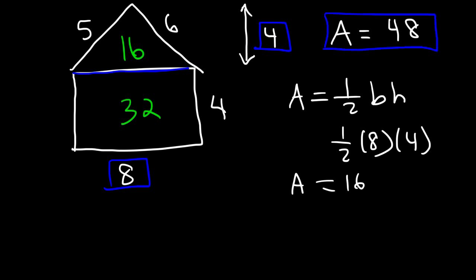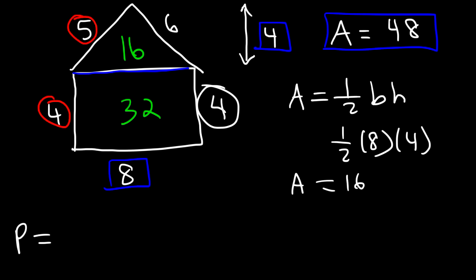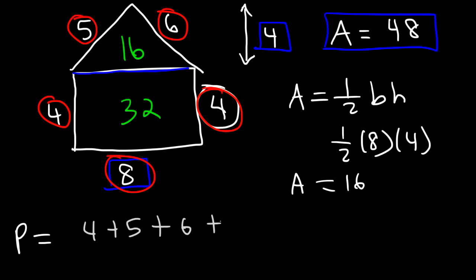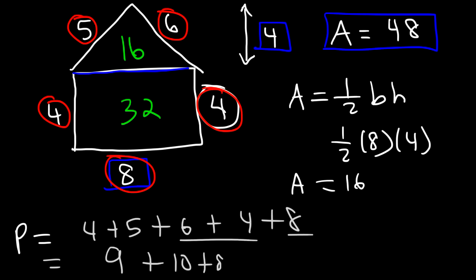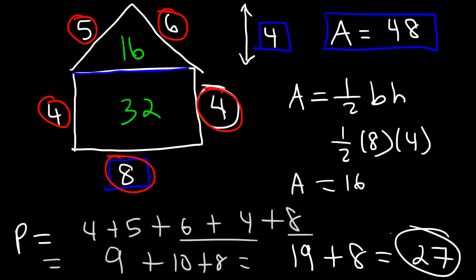Now the last thing we need to do is calculate the perimeter. If this side is 4, this side must also be 4. So we need to add up all 5 sides: 4 plus 5, plus 6, plus 4, plus 8. 4 plus 5 is 9. 6 plus 4 is 10. 9 plus 10 is 19. And 19 plus 8 is 27. So therefore, the perimeter of the figure is 27 units.